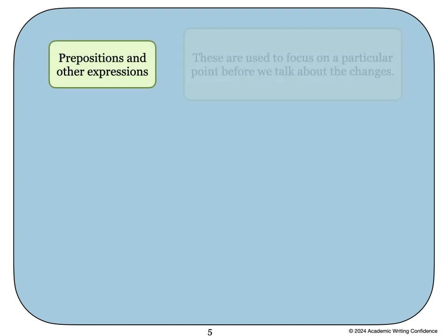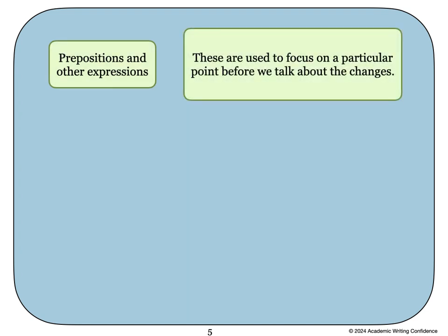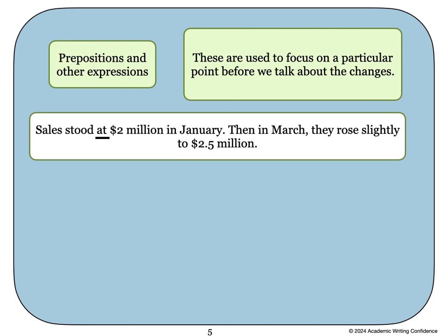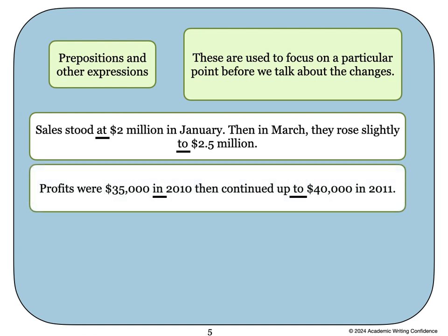We also often use prepositions and other expressions to focus on a particular point before we talk about the changes in the information. For example, sales stood at $2 million in January. Then in March, they rose slightly to $2.5 million. Here's another example: Profits were $35,000 in 2010, then continued up to $40,000 in 2011.